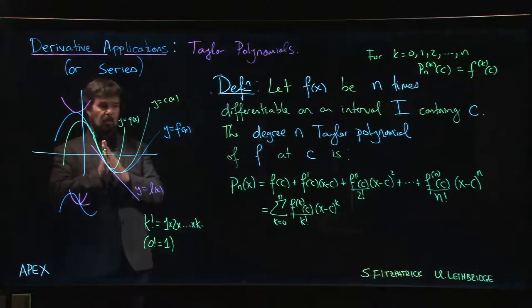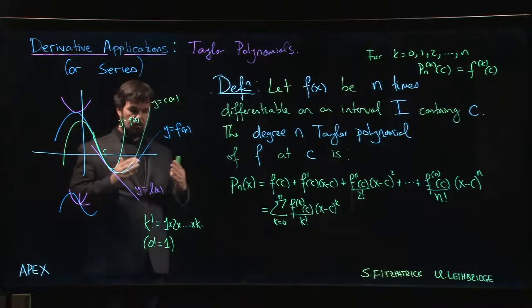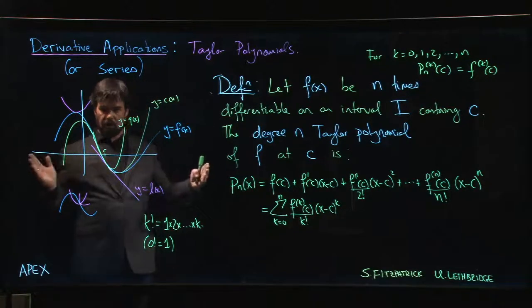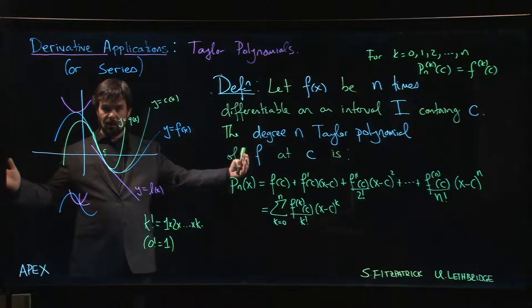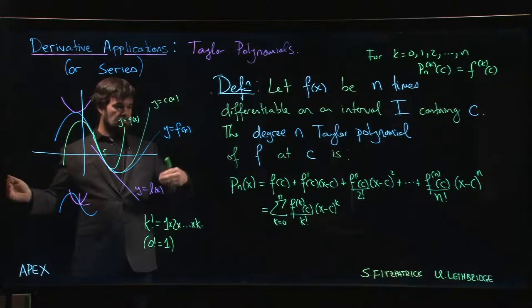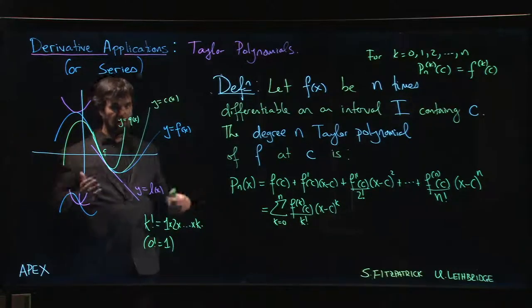Eventually they're going to diverge, but over some interval they're going to agree. If you are in the context of looking at series, we'll see later on that as you add more terms the approximation gets better and it gets better over a bigger interval. So if you add infinitely many terms, maybe you actually get exact agreement everywhere. That's the goal of Taylor series which you're going to see.